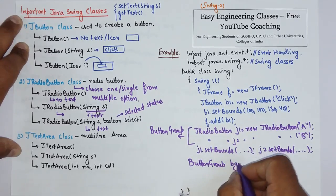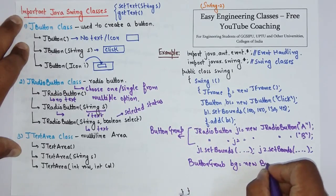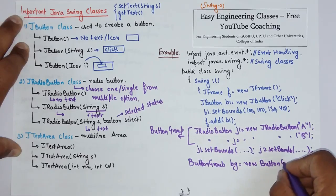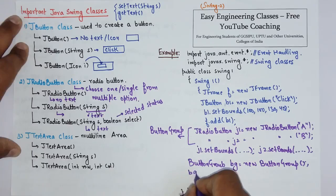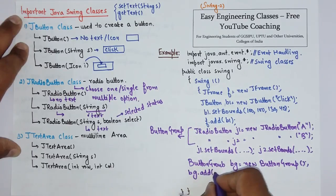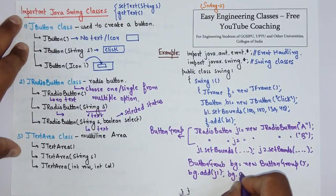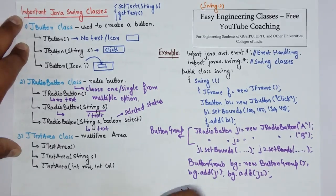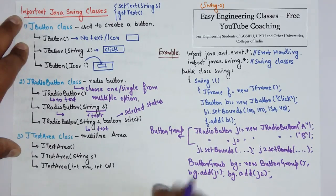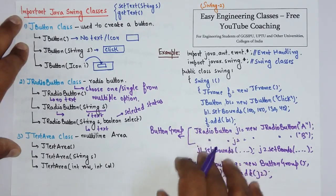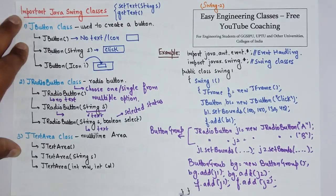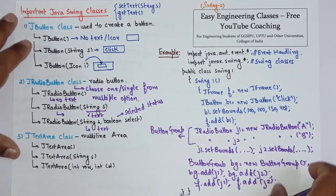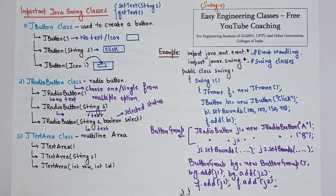ButtonGroup bg equals new ButtonGroup, and add both these objects in this button group. So bg.add J1 and bg.add J2. Now finally you have to add these radio buttons in the frame, so add f.add J1 and f.add J2.